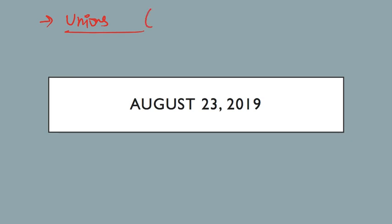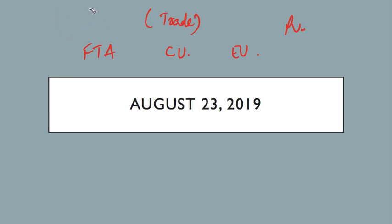I asked you to search by yourself about different kinds of trade unions — not the typical trade unions that we have in companies, but unions of different kinds with respect to trade between countries. So there can be a free trade agreement, a customs union, an economic union, a political union, and the list goes on. It's very important to understand what each means, specifically for the examinations we are targeting.